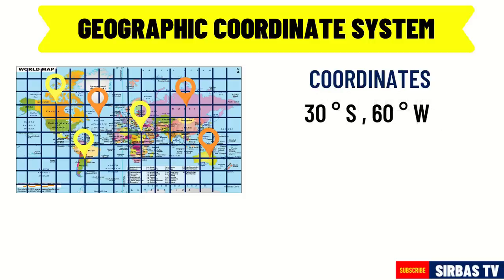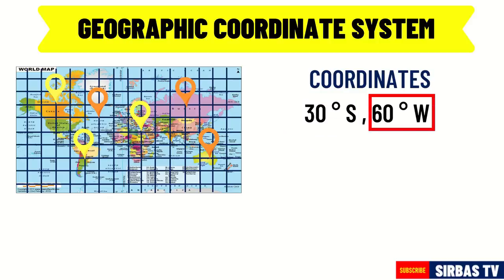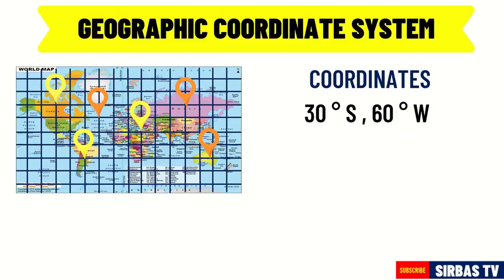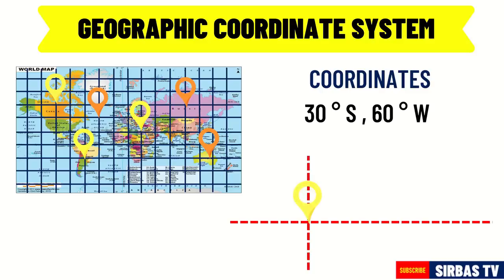An example of a coordinate is 30 degrees south and 60 degrees west. In this example, 30 degrees south is the latitude and 60 degrees west is the longitude. How can we use this information in finding what place is located on these coordinates? Our main goal is to find the point where these coordinates will intersect. Their point of intersection is the place that these coordinates represent.